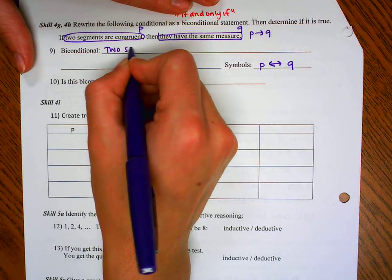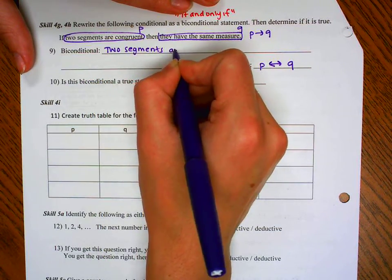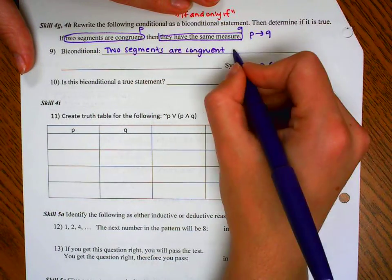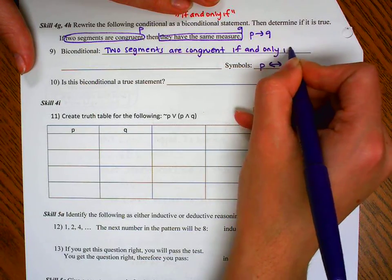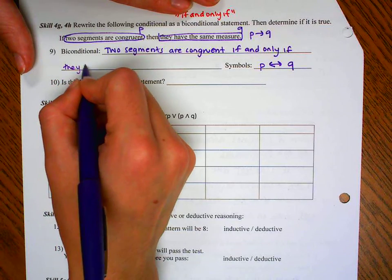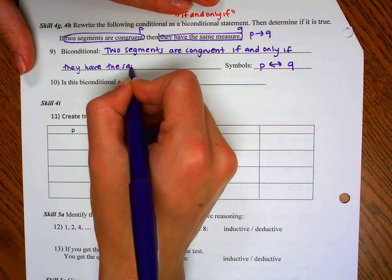So we start with P. Two segments are congruent. Now we have our double arrow. If and only if Q, they have the same measure.